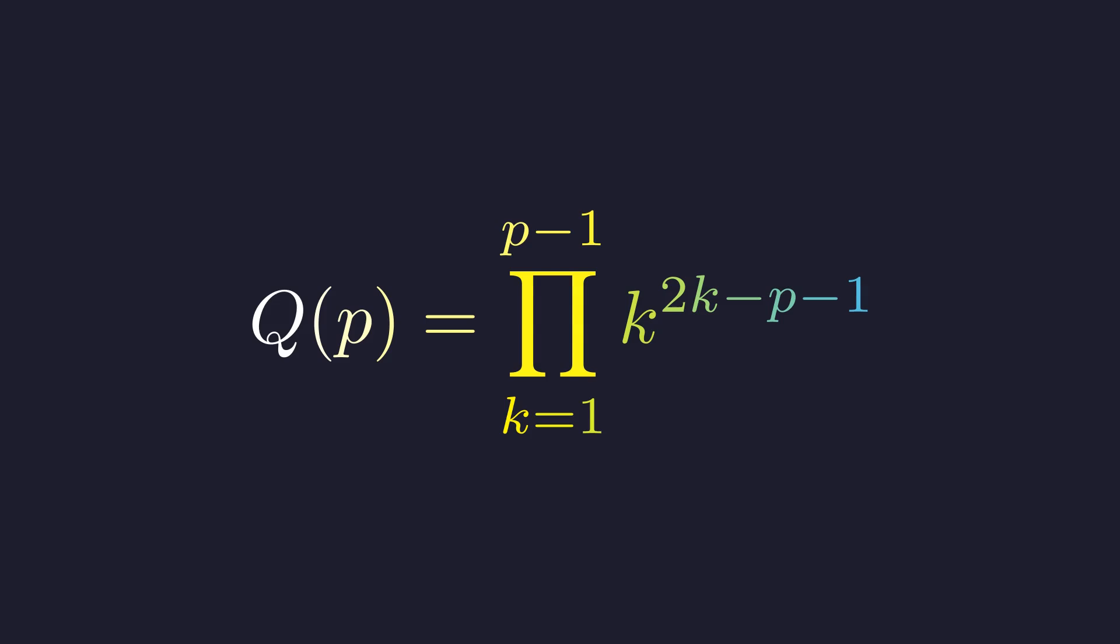If you're like me, your first instinct is to think that can't be right—those exponents go negative, which should give us fractions all over the place. But mathematics has a way of surprising us, so let's dig in and see what's really going on.